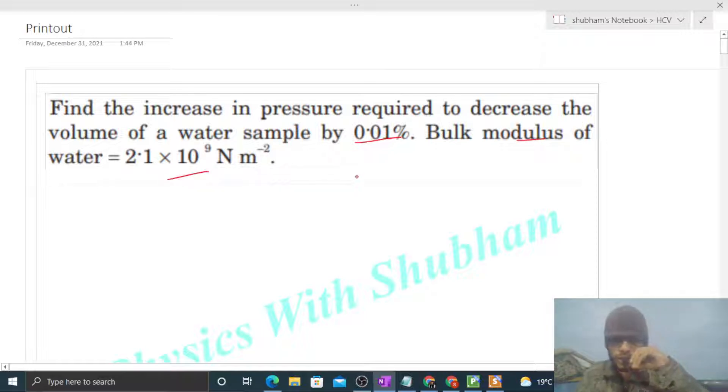We have to find the value of change in pressure so that the volume of water sample decreases by 0.01%. This means change in volume divided by initial volume times 100, that value is 0.01.